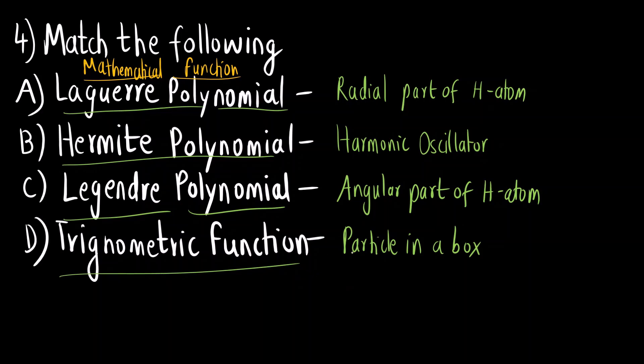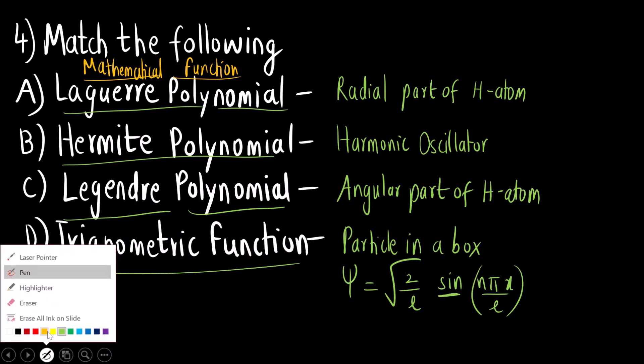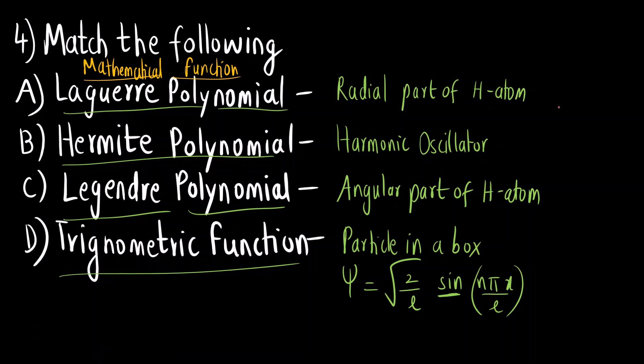And last one is trigonometric function is used for particle in a box model. The formula for particle in a box we know ψ is equal to root of 2/L sine(nπx/L). The sine here is a trigonometric function. Now in this question also what they had done is they had framed the question very carefully. Everybody knows harmonic oscillator we use Hermite polynomial, particle in a box we use trigonometric functions. So there were two options where these two were same. So the main purpose of this question is whether they wanted to check whether you know which mathematical function is used for radial and angular part. So these were the correct options.